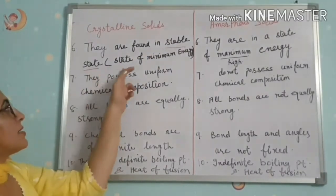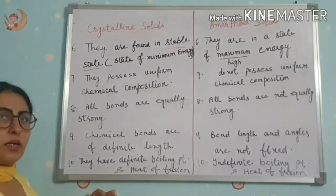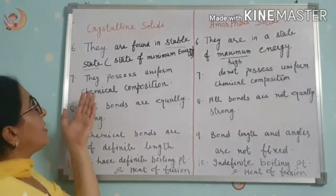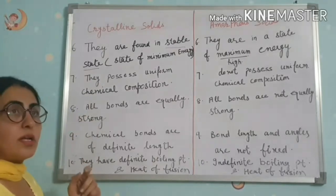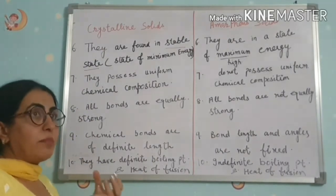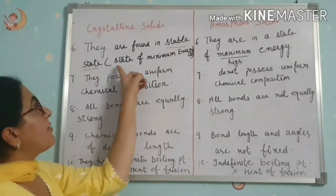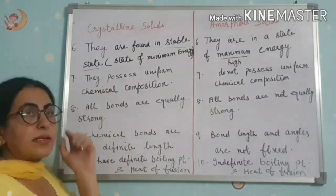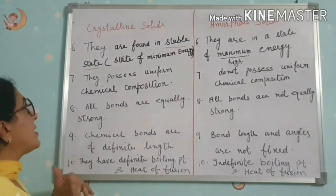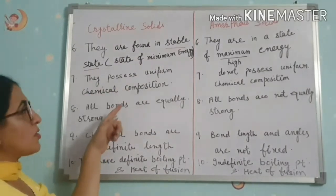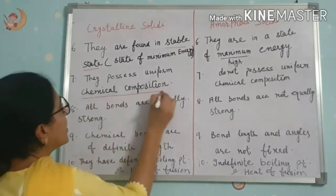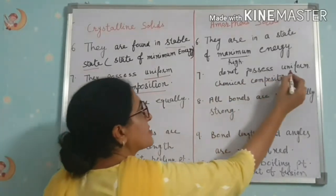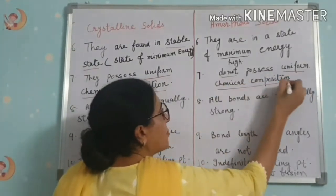The sixth point: crystalline solids are found in a stable state, meaning a state of minimum energy. Amorphous solids are in a state of maximum energy. When liquids transition into crystalline solids, more energy is used and the remaining energy is minimal, giving them minimum energy. Amorphous solids retain more energy, so they are less stable than crystalline solids. The seventh point: crystalline solids possess uniform chemical composition, while amorphous solids do not possess uniform chemical composition.